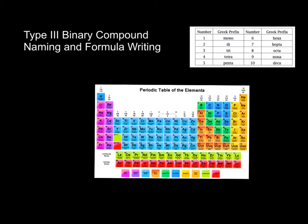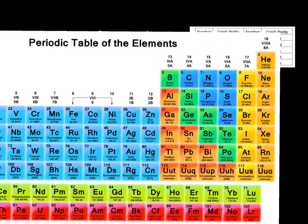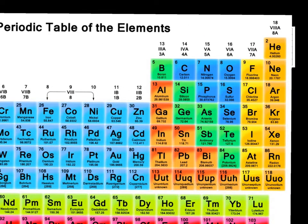In this video, we're going to look at how to name type 3 binary compounds and also how to write the formulas based off of the name. You'll know that you're working with a type 3 compound if you have compounds that only involve nonmetals. We're focusing only on binary compounds, so compounds that contain two nonmetals. We have a staircase that goes across the periodic table, and anything to the right of that staircase is considered a nonmetal.